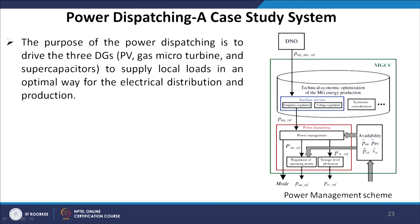With the MGCC system in place, we have ancillary services for both frequency and voltage regulation, many economic considerations, power dispatching regulation of operating points, storage level, and protections. This mechanism is overall monitored and controlled by the DNO and is commonly known as the power management scheme of a microgrid connected to a distribution system.